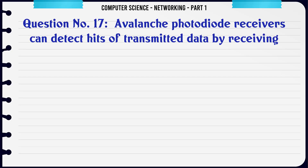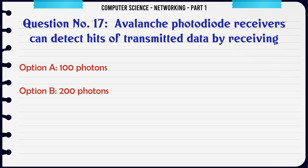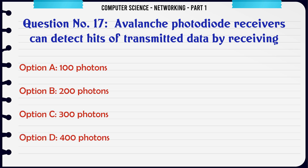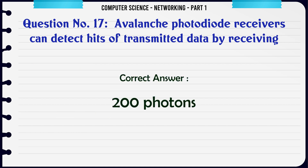Avalanche photodiode receivers can detect bits of transmitted data by receiving: A. 100 photons. B. 200 photons. C. 300 photons. D. 400 photons. The correct answer is: 200 photons.